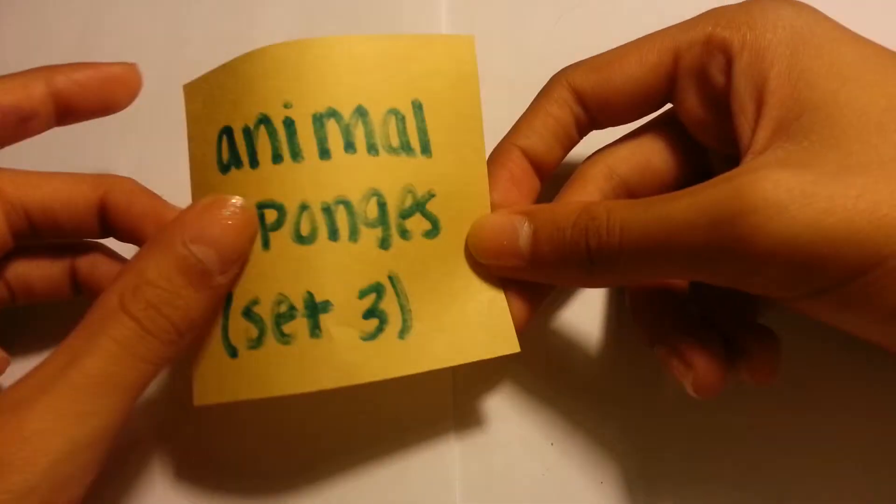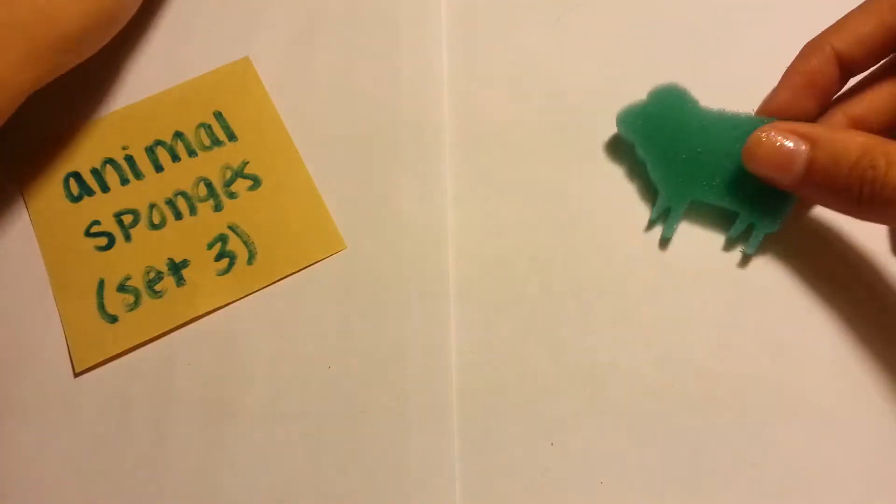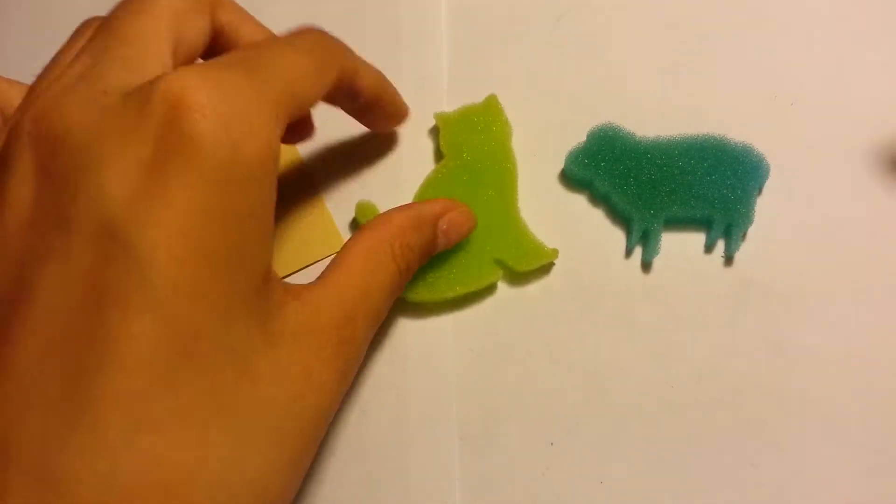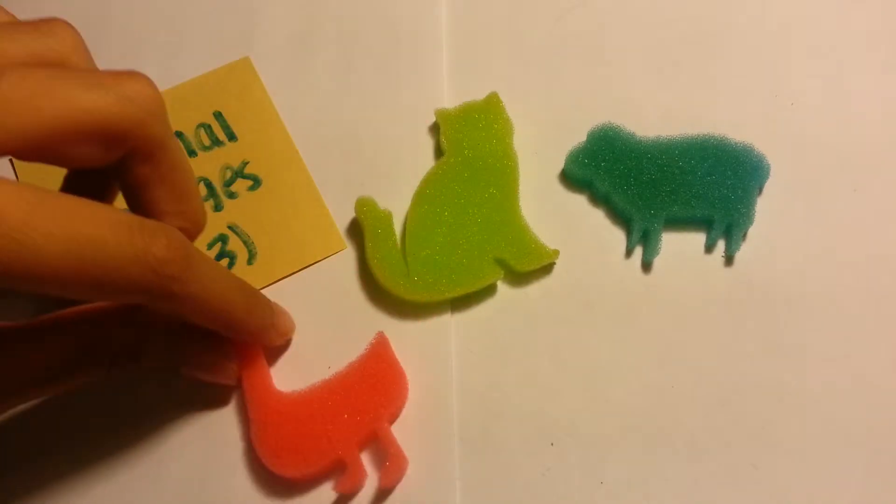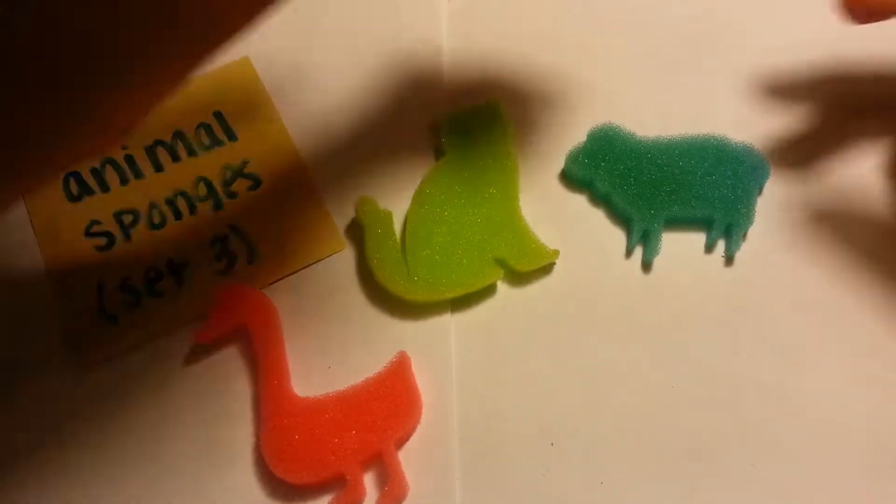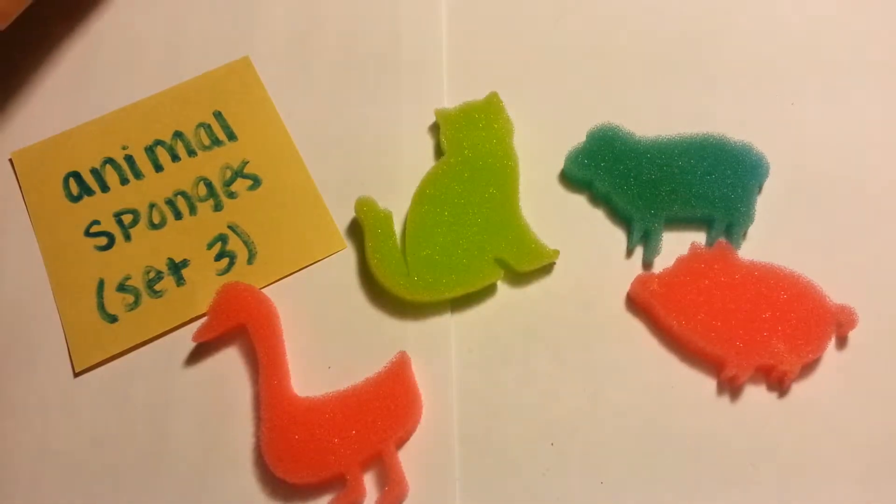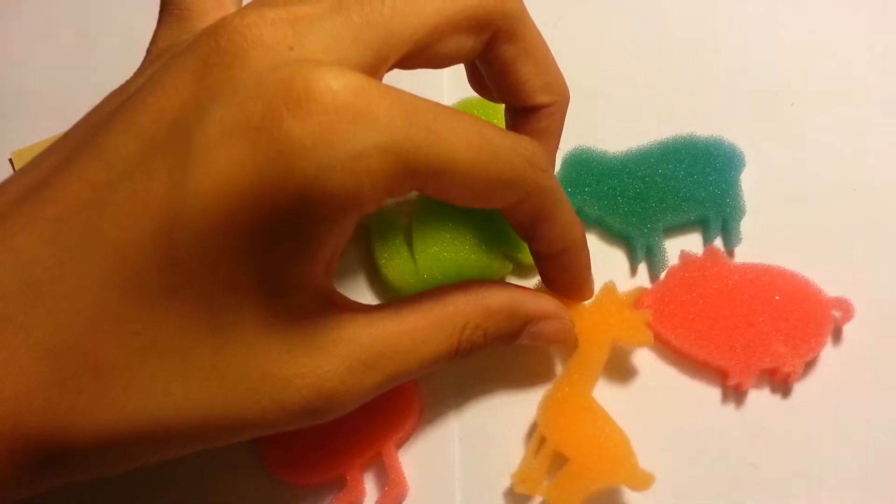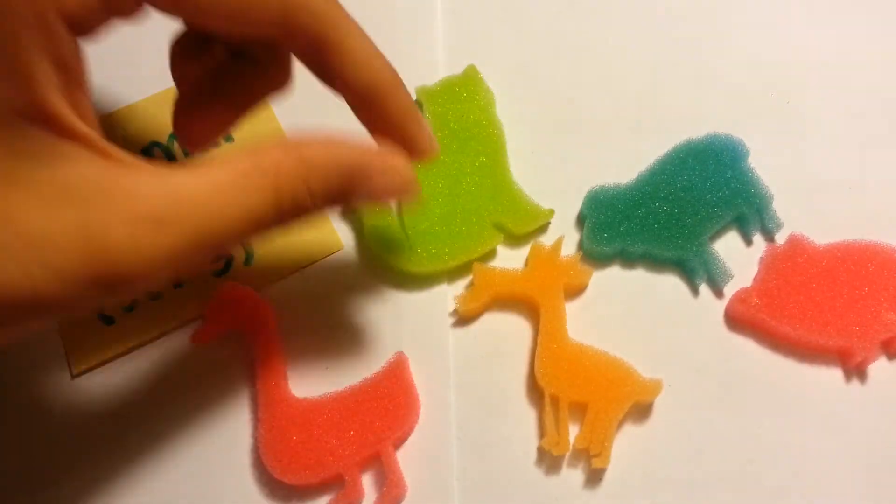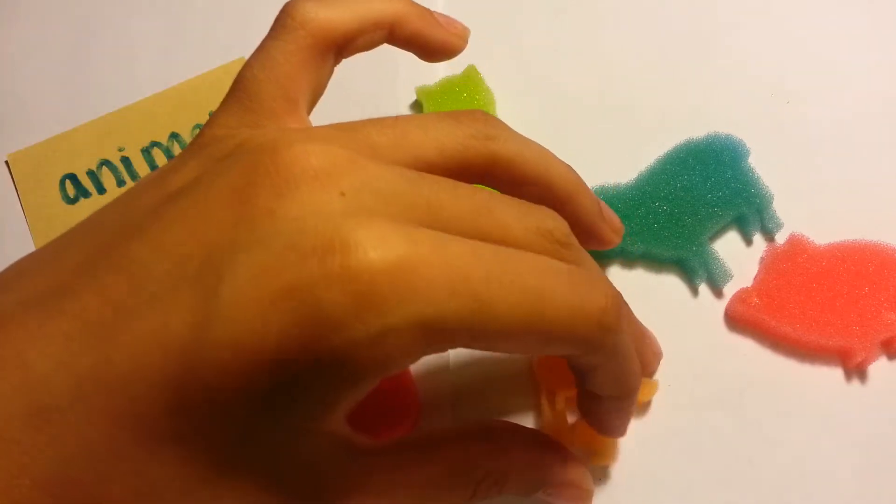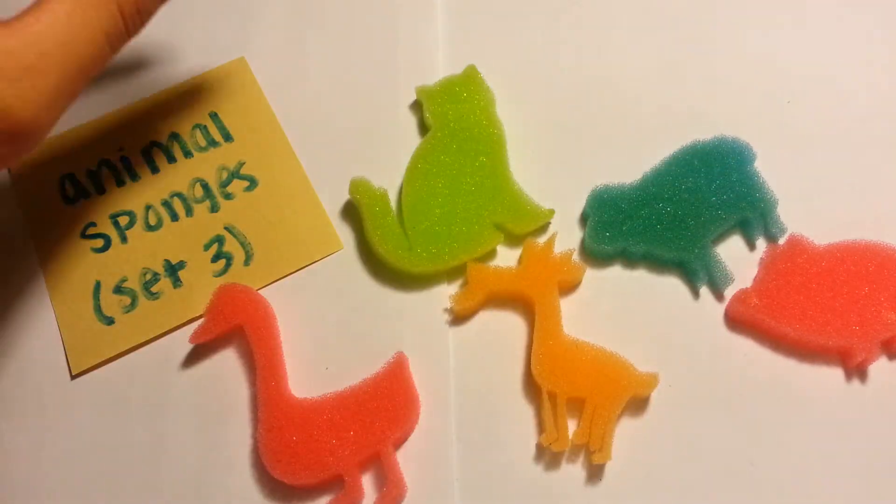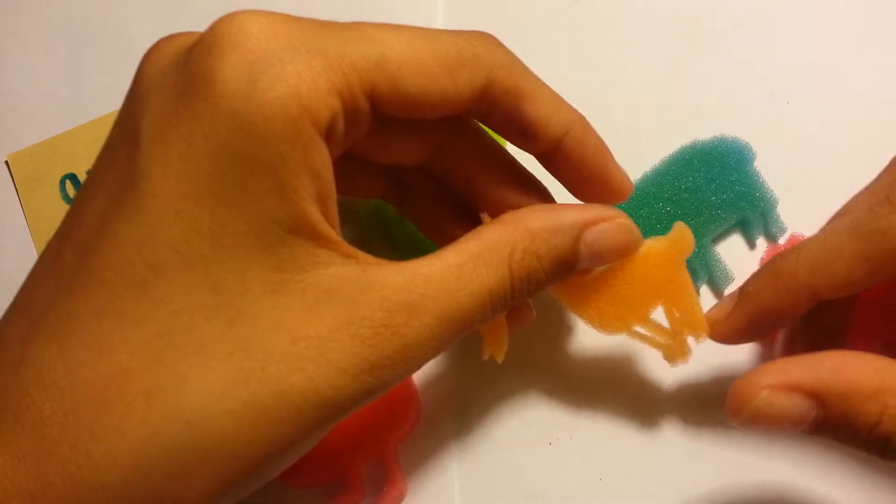And here is the animal sponges set three. We have a sheep, a cat, a goose or a swan, a pig, and I think it's like a goat, billy goat. I don't know what this is. It has like a beard, so I'm assuming it's a goat. So yeah, it looks like he has an extra leg here. It's kind of weird.